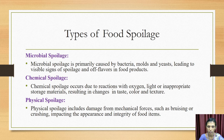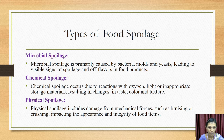Chemical spoilage involves chemicals such as oxygen, light, or inappropriate storage materials, resulting in changes to food taste, color, or texture. Physical spoilage involves mechanical forces such as bruising and crushing, which impact the appearance and integrity of food items. These are the common spoilages caused by microbes, chemicals, and physical factors.